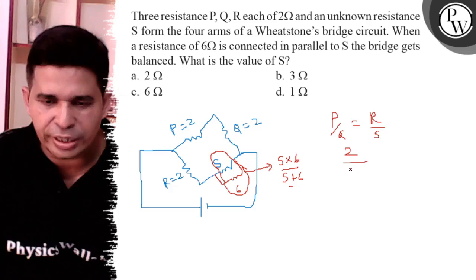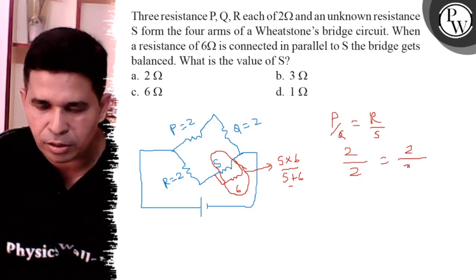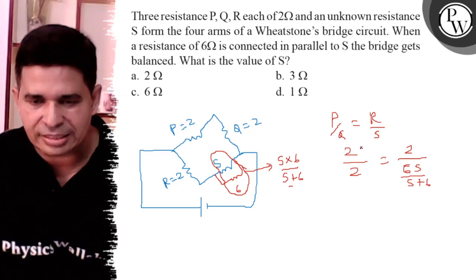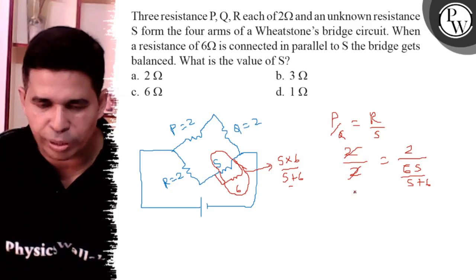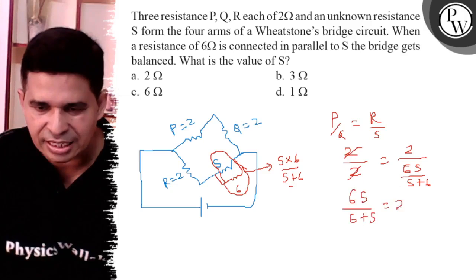Now P is 2, Q is also 2, R is 2, and this is 6S upon S plus 6. To find the value of S, the 2s cancel out. So 6S upon 6 plus S is equal to 2.